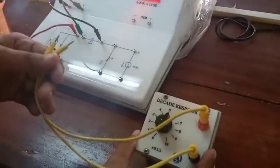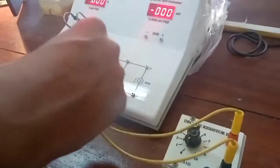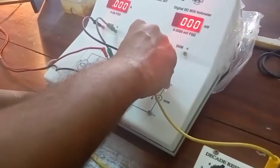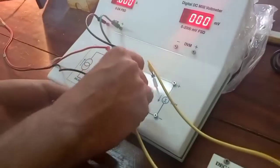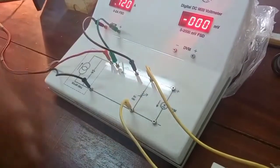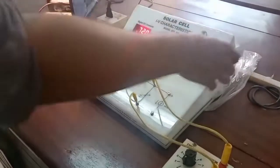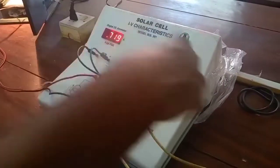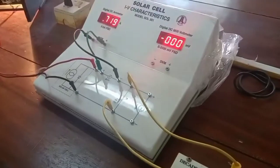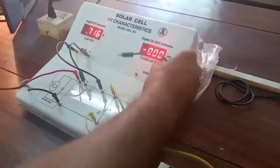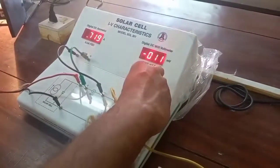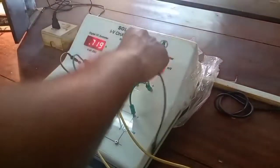Then connect the rheostat and the voltmeter connected parallel with the rheostat. That is positive to positive and negative to negative.